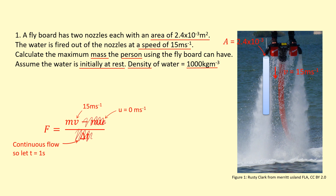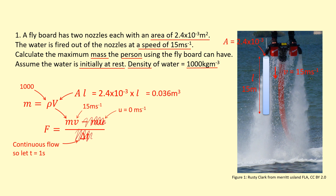The final velocity at which the water is leaving is 15 m/s. The mass of the water being fired is density times volume. Density of water is 1000 kg/m³, and volume of the cylinder is cross-sectional area times length. We have the area, but what is the length? Since water is fired downwards at 15 m/s and time equals one second, each second 15 metres of water comes out — so we use 15 m as the length. Doing cross-sectional area times 15 gives a volume of 0.036 m³.